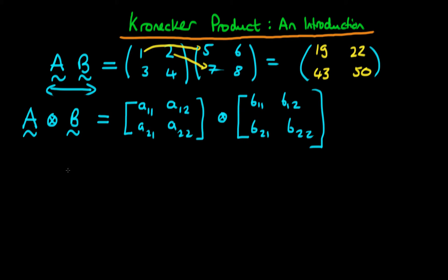Okay, so now we can define what the Kronecker product is. The Kronecker product of A with B is defined as A11 times the matrix B as its top left component. But because I'm multiplying A11 times the matrix B, it's actually going to have four components here.